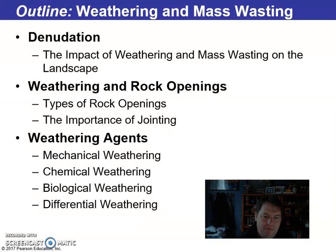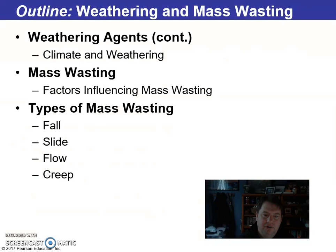Topics include: weathering and rock openings, types of rock openings, and jointing — essentially how different types of land masses relate to each other. Weathering agents: mechanical, chemical, biological, differential, and climate. Then mass wasting — factors influencing it and the types: fall, slide, flow, and creep.